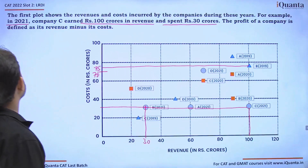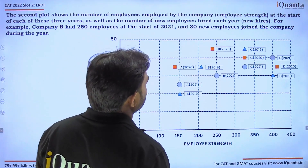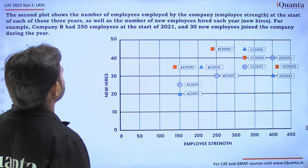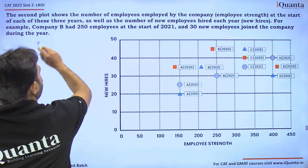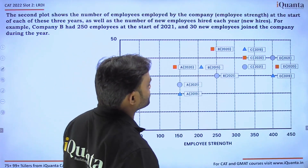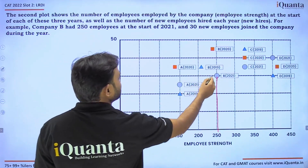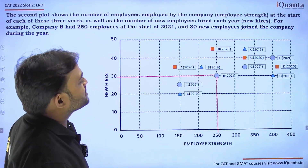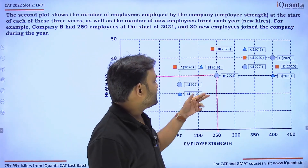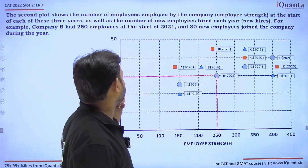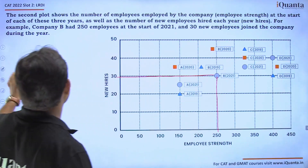The second plot shows the number of employees employed by each company at the start of each of the three years, as well as the number of new employees hired each year. For example, company B had 250 employees at the start of 2021 and 30 new hires in that year. So the total employees in company B in 2021 would be 250 plus 30, which is 280.